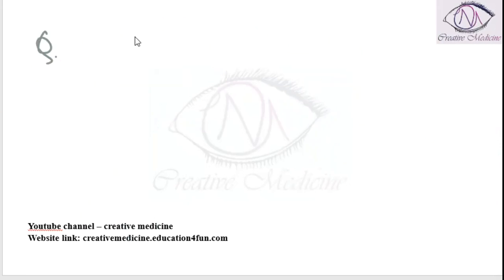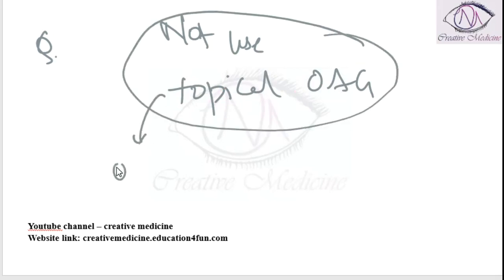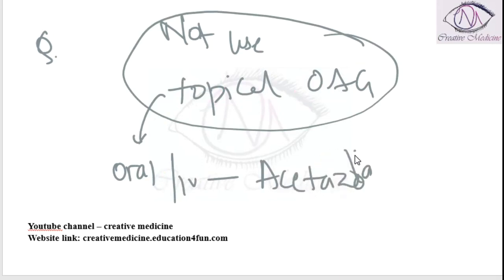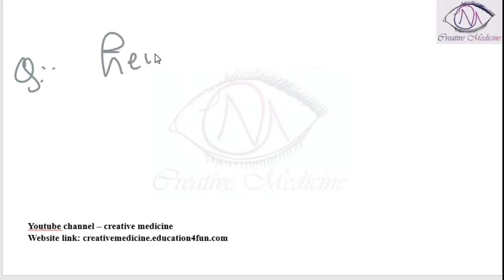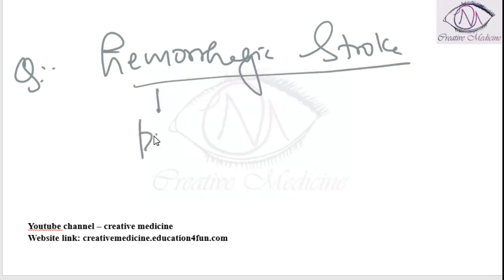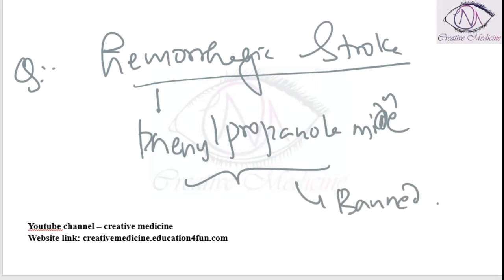Which of the following drugs is not used topically for open angle glaucoma? The drug used orally or IV is acetazolamide. It is not used topically. Acetazolamide is not used topically in open angle glaucoma. Which of the following drugs is associated with hemorrhagic stroke? Hemorrhagic stroke is mainly associated with phenylpropanolamine. Phenylpropanolamine is banned because of the side effect of hemorrhagic stroke.